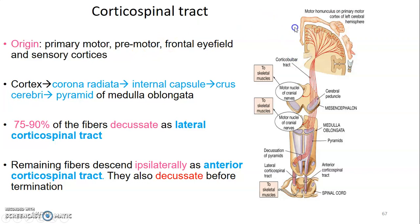From the cortex, nerves pass through the corona radiata to the posterior limb of the internal capsule. From the internal capsule they pass through the crus cerebri — the cerebral peduncle of the midbrain — then through the basal part of the pons, and at the medulla they pass through the medullary pyramids. There, 75 to 90 percent decussate as the lateral corticospinal tract, while the remaining 10 to 25 percent continue downwards without decussating as the anterior corticospinal tract, which decussates just before terminating at the lower level.